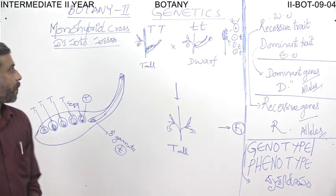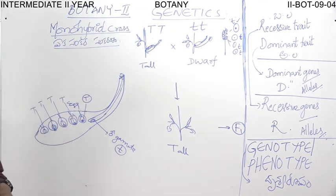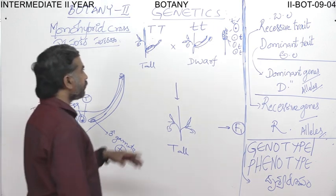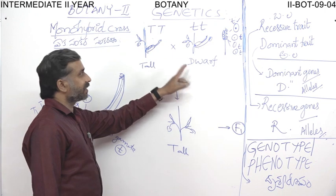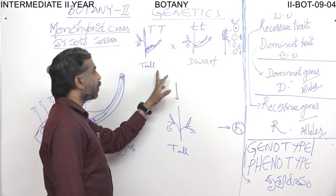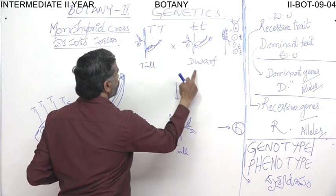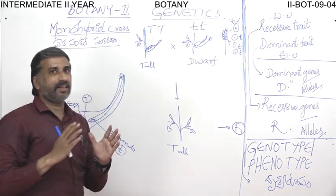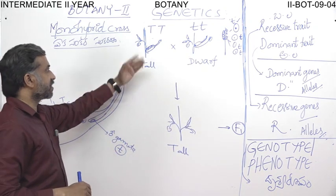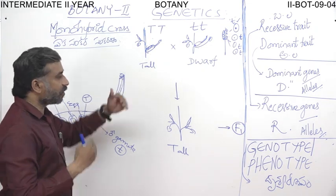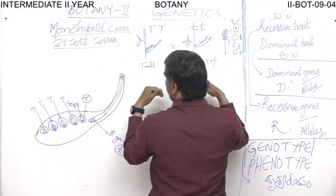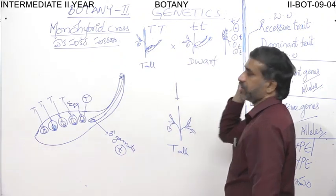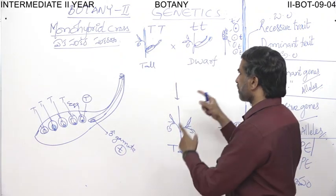We will continue the monohybrid class in this session. In the last session, we were examining the genotypes — what genes are responsible for tallness and dwarfness, and how Mendel represented the characters and factors for these genes.